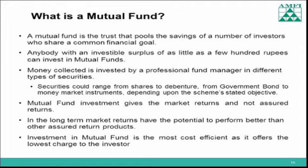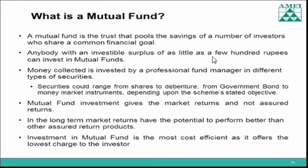Normally, the mutual fund unit value is 10 rupees. For example, Person A invested 1,000 rupees, Person B invested 2,000 rupees, and Person C invested 3,000 rupees. The total pooled money is 6,000 rupees. With this 6,000 rupees, the mutual fund divides into units at 10 rupees per unit — total 6,000 divided by 10 gives 600 units. In this way, the mutual fund operates. Anybody with an investable surplus of even a few hundred rupees can invest in mutual funds. This is the greatest feature of mutual funds.